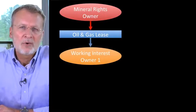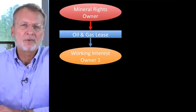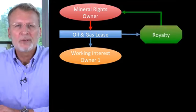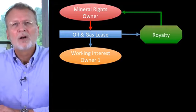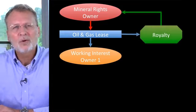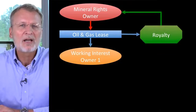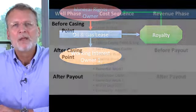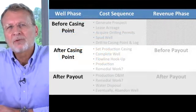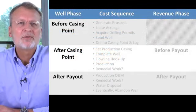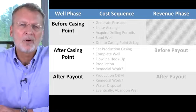The working interest owner leases the mineral rights from the mineral rights owner. In return, the mineral rights owner receives, among other forms of compensation, a royalty on the sale of any oil and/or gas produced from the mineral estate by the working interest owner. This royalty is cost-free, meaning that the mineral rights owner does not have to contribute towards any of the costs to drill, complete, and/or operate a well.